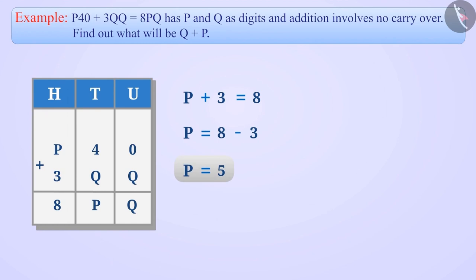Now, since we know the value of p, we can find the value of q using 4 plus q equals p. Putting the value of p in this equation, we get 4 plus q equals 5. That is, q equals 5 minus 4, which equals 1.